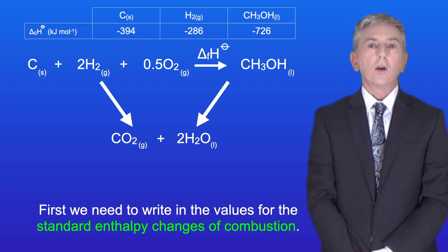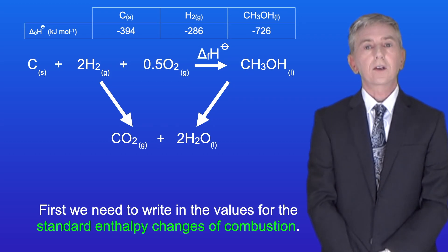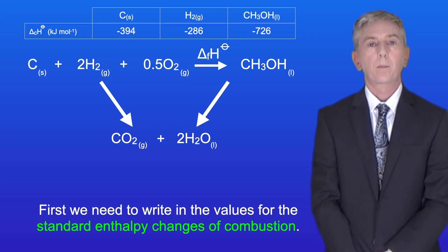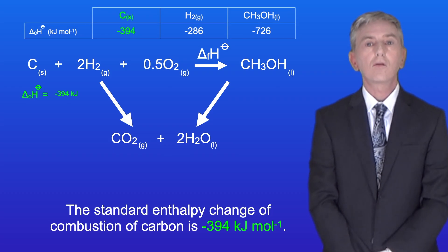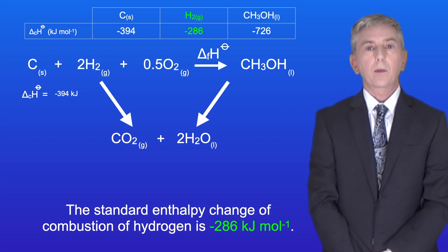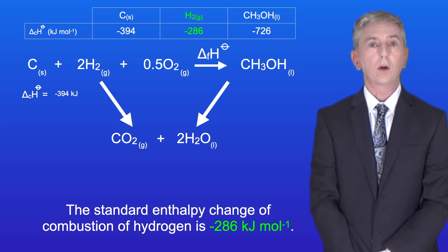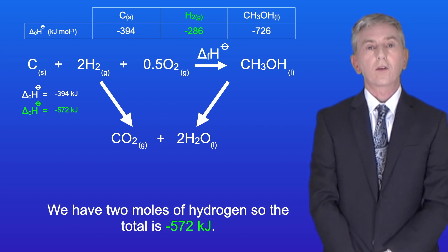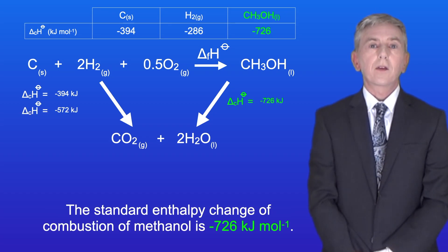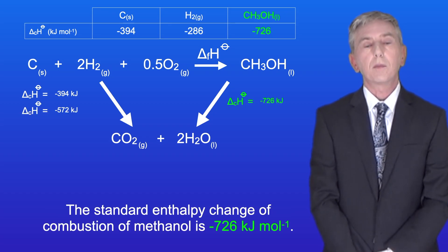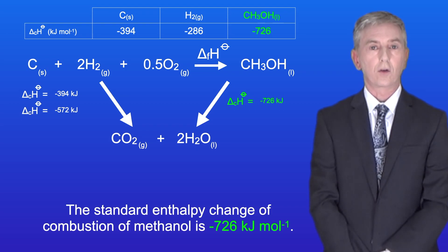First we need to write in the values for the standard enthalpy changes of combustion. The standard enthalpy change of combustion of carbon is minus 394 kilojoules per mole. The standard enthalpy change of combustion of hydrogen is minus 286 kilojoules per mole — we've got two moles of hydrogen so the total is minus 572 kilojoules. The standard enthalpy change of combustion of methanol is minus 726 kilojoules per mole.